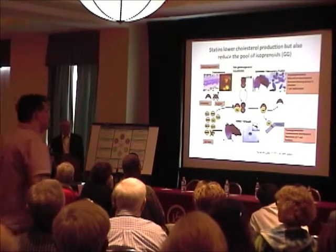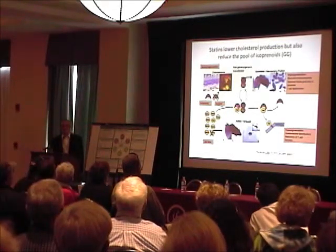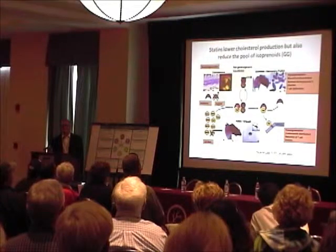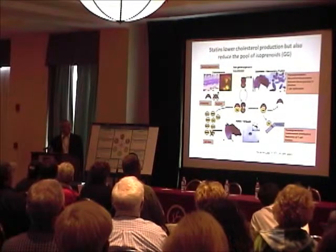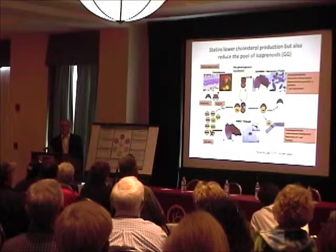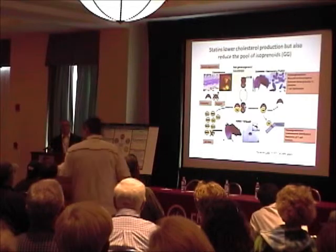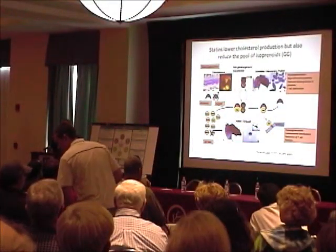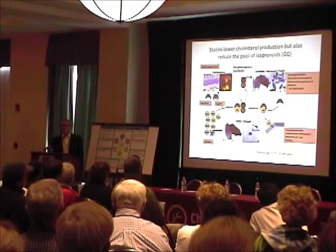There's a holo-enzyme complex made up of Rab-escort protein 1 — that's the choroideremia gene product. It participates with a couple of other proteins: the alpha and beta subunits of geranylgeranyl transferase. That's the enzyme that's going to add these two geranylgeranyl units onto specific proteins.